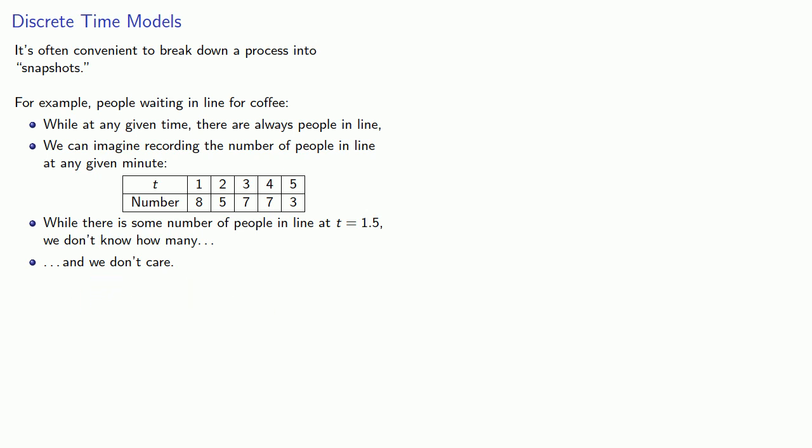A discrete time model determines a quantity at time t equals k based on the amount at time t equals k minus 1.